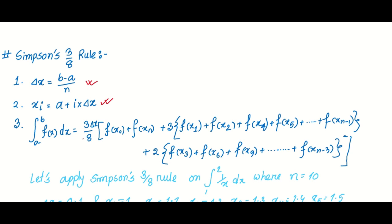So, first of all, in Simpson's 3 by 8 rule, we calculate del x as b minus a divided by n, where b is the upper limit, a is the lower limit, and n is the number of iterations. The x_i value is computed based on the lower limit a plus i times del x. This gives us the iterational value of the function.